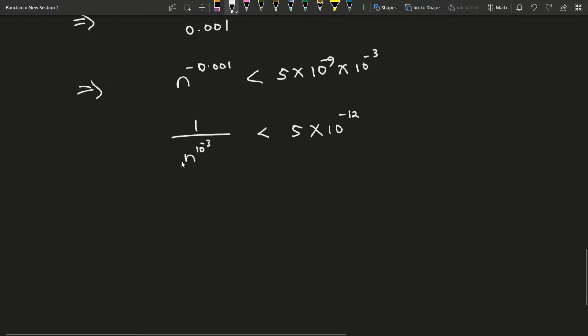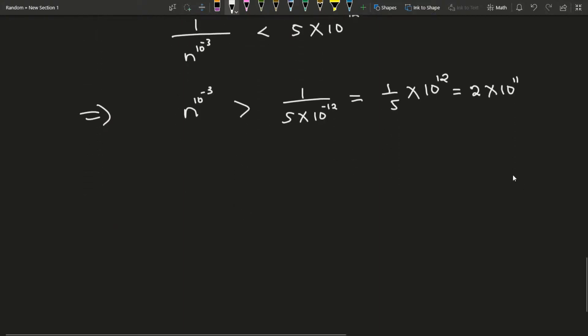If you reverse this you get that n to the 0.001 is bigger than 1 over this, which is the same as 1 over 5 times 10 to the negative 12. If you pull out one of these 10s and divide by 5, this becomes 2 times 10 to the 11.